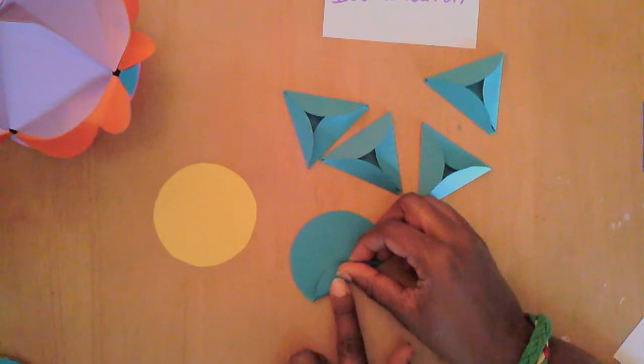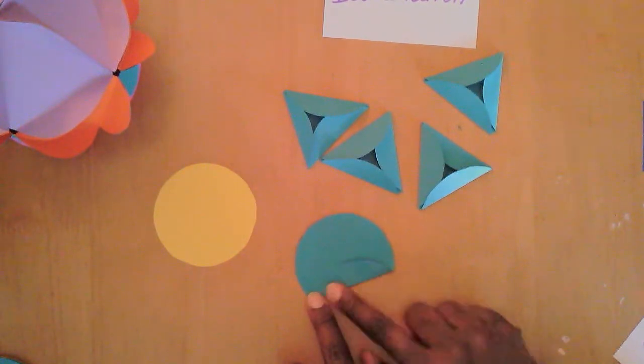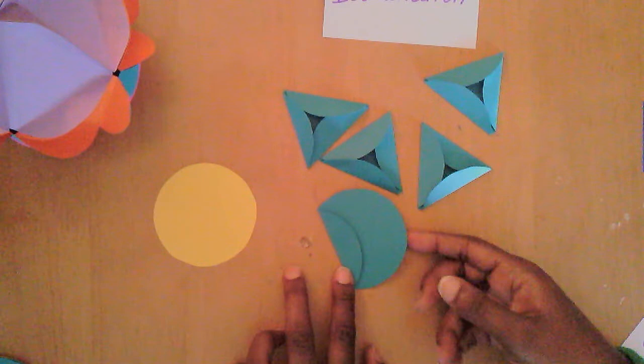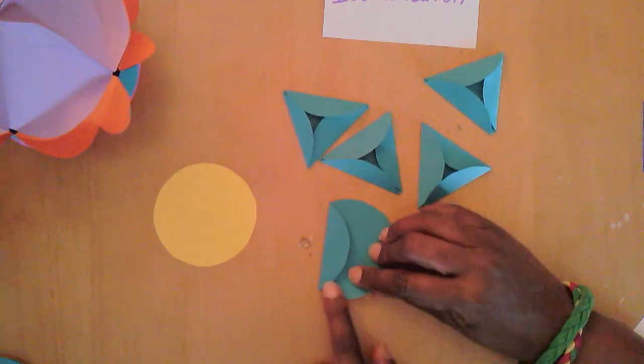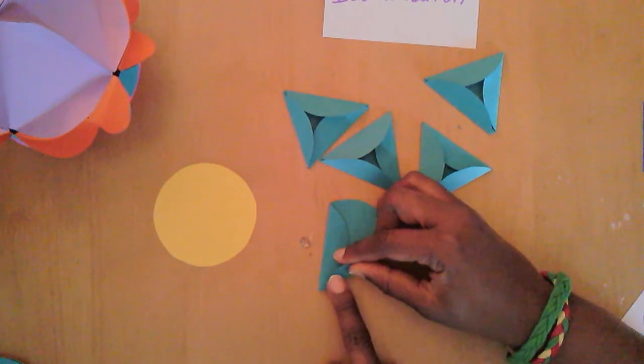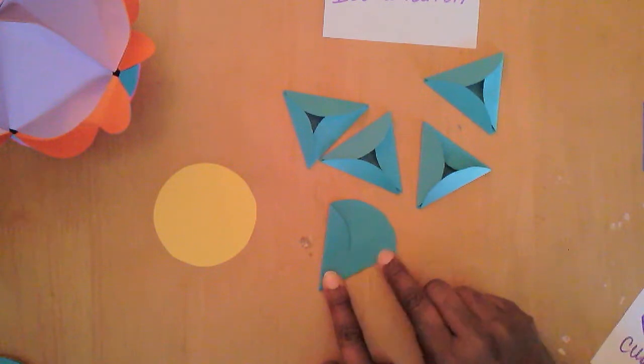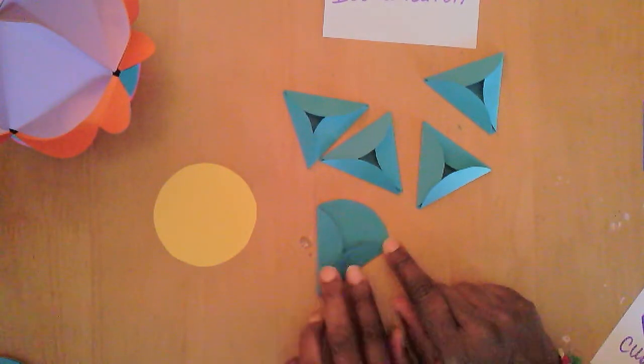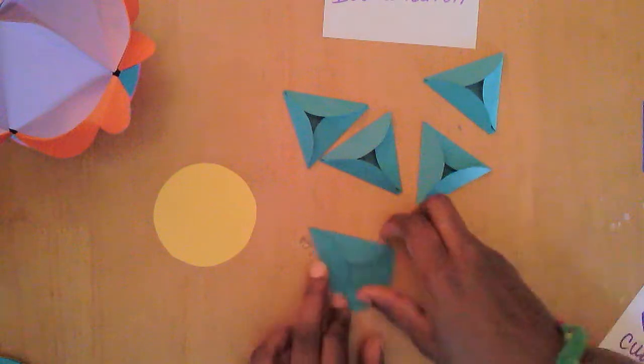We're going to fold one edge inward and then overlapping that one just a little ways, overlap again and fold another side in. And then the last one should be pretty easy.